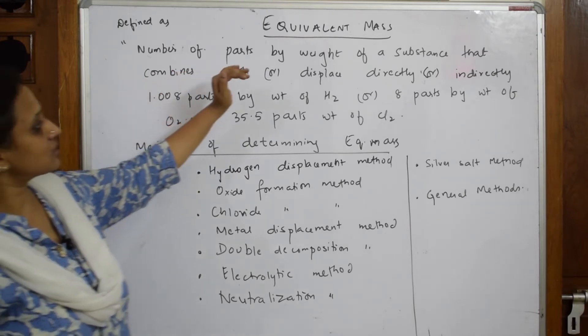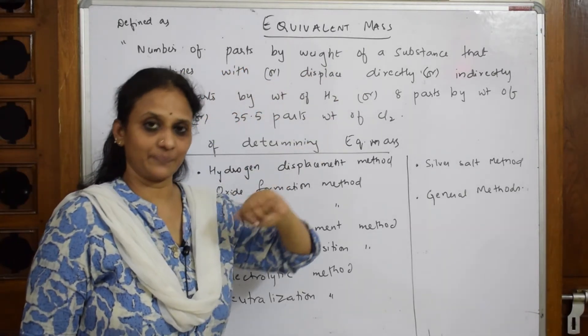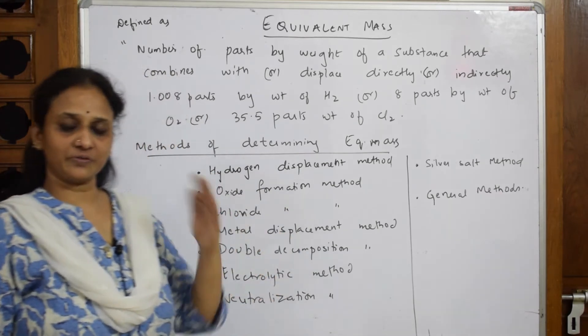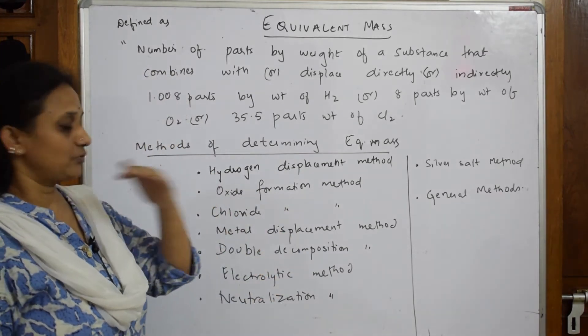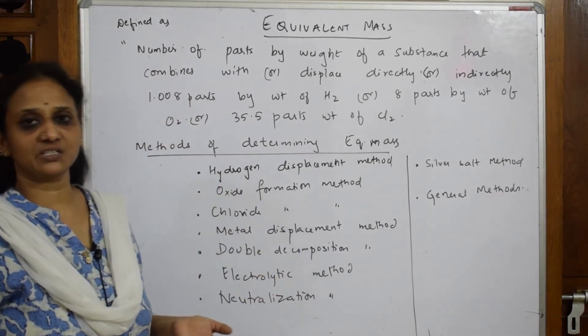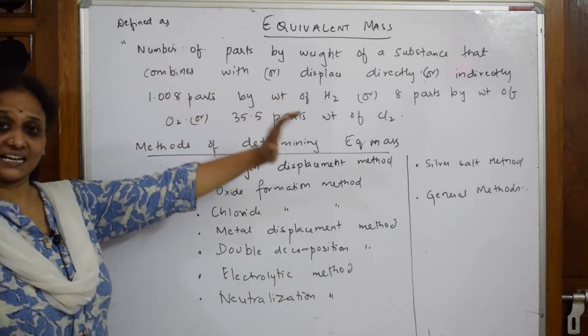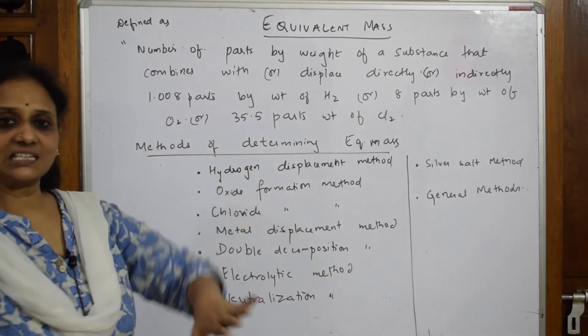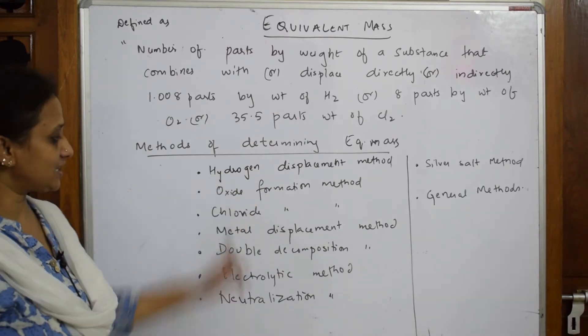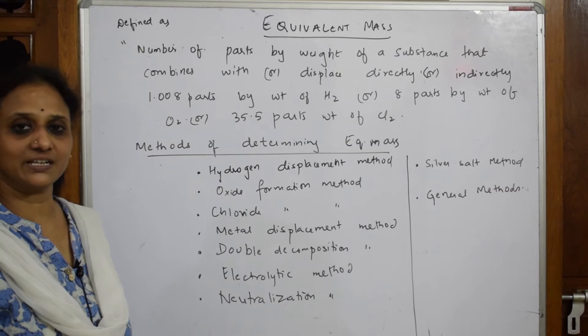It is defined as number of parts by weight of a substance. We will be taking a ratio of the number of parts of the weight of the particular substance, whichever element is given to you, that combines with or it displaces directly or indirectly. So remember all these keywords. It's easy when I apply in a new, all of these you will understand.